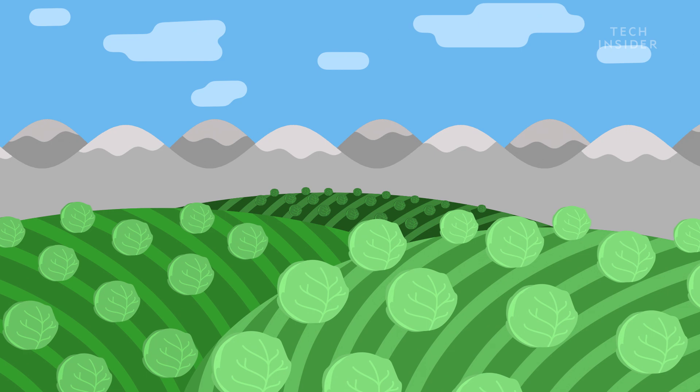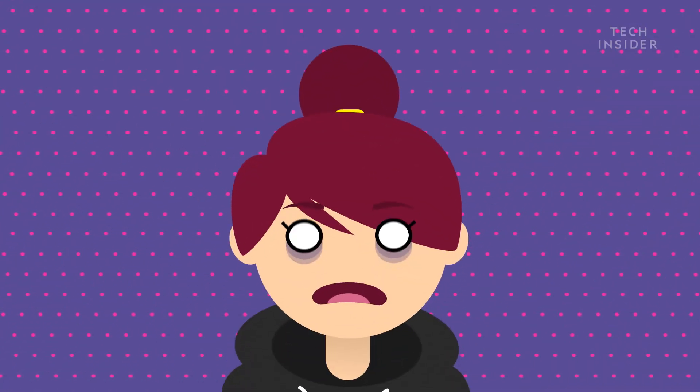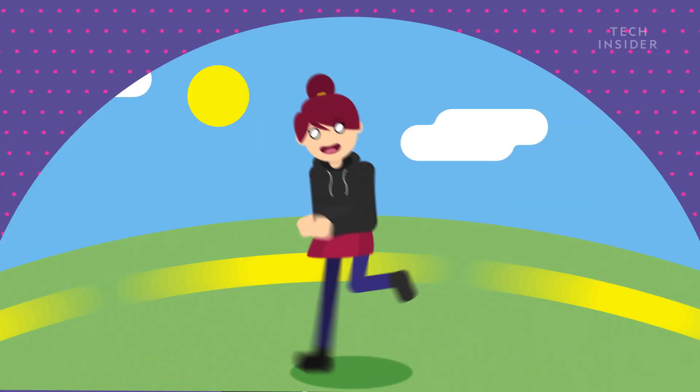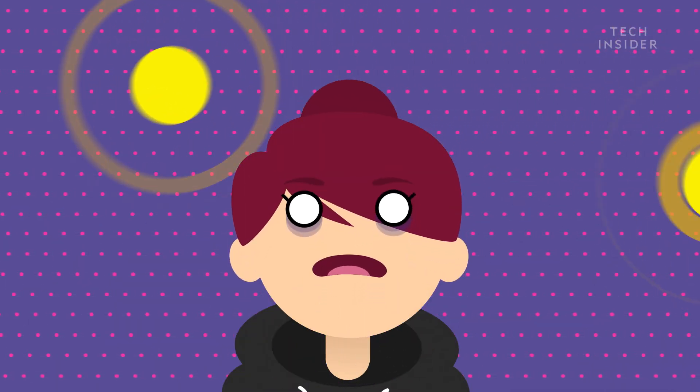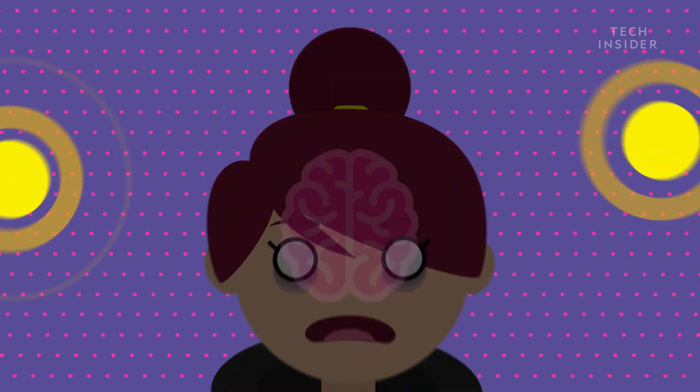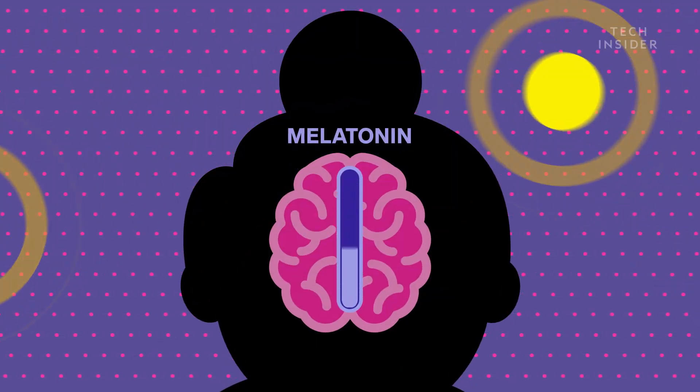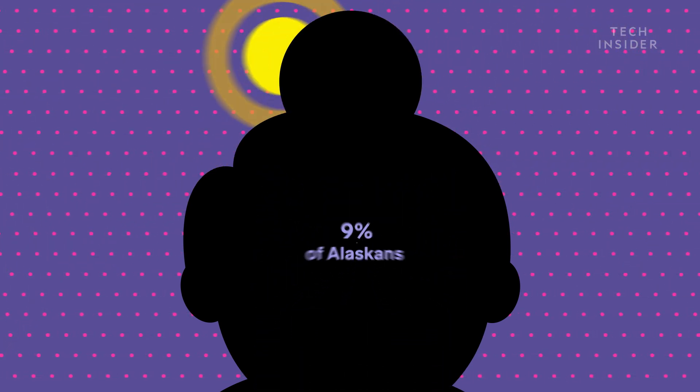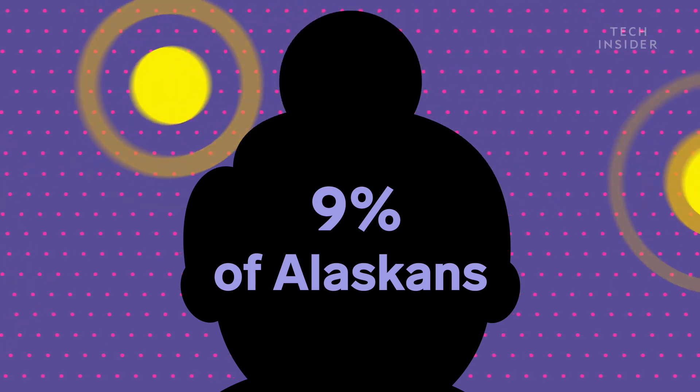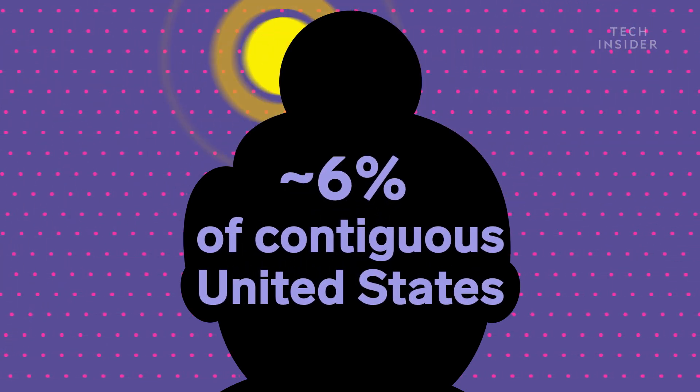But while animals and plants would thrive, humans wouldn't. We evolved to be active during the day and sleep at night. But if we were exposed to unending sunlight, our brains would stop producing the hormone melatonin, which we need to sleep at night. And that could lead to sleep deprivation, depression, and ultimately, a more severe, chronic version of these symptoms called Seasonal Affective Disorder, which already affects 9% of Alaskans, compared to just 6% of the entire United States.